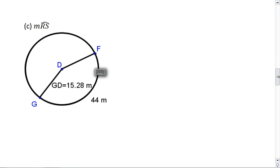Lastly, you're going to find the measure of arc FG. This is in degrees, that's why it's the measure of the arc, not the length of the arc. If you see that little m, we're looking for degrees. We're looking for the measure of arc FG when you know that the length of that arc is 44 meters, and the radius of the circle is 15.28 meters.